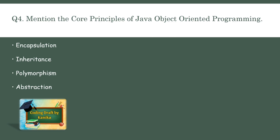The next principle is abstraction. It is the concept of hiding implementation details and showing only the necessary features of an object. So these are the core principles of Java object-oriented programming.